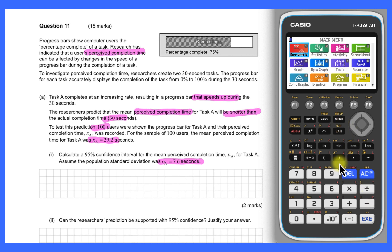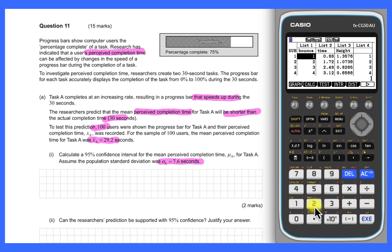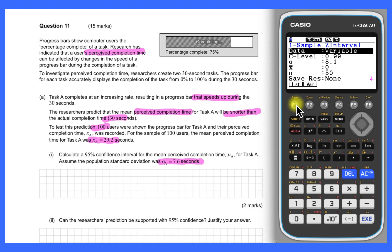We have a look at the interval section where we want a one-sample interval. This one is a 95% interval, so we'll change that to 0.95. The standard deviation we were given was 7.6, and the x bar value was 29.2, and the number of people in the sample was 100. So there's our interval.